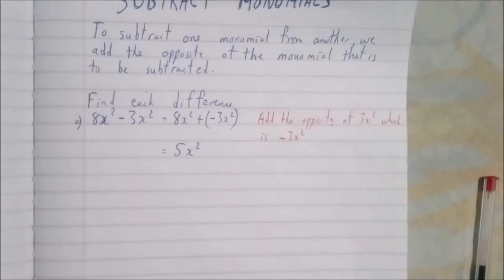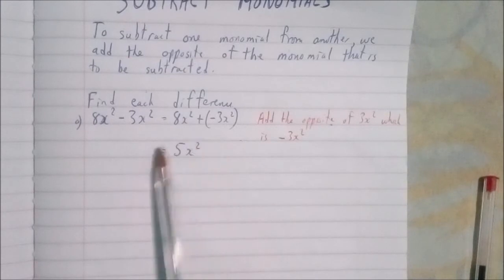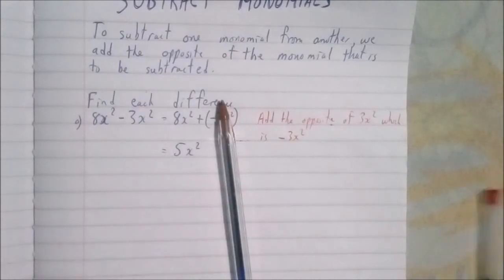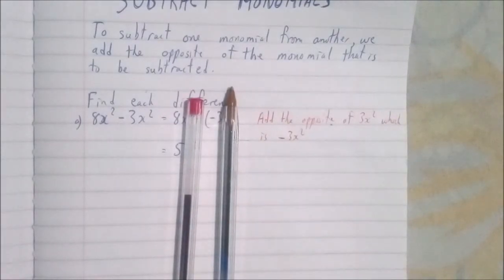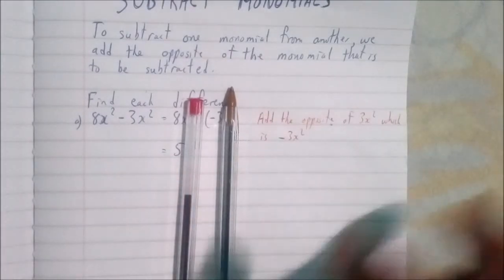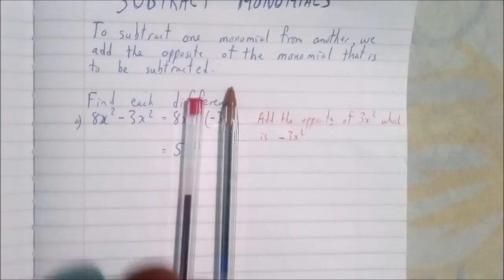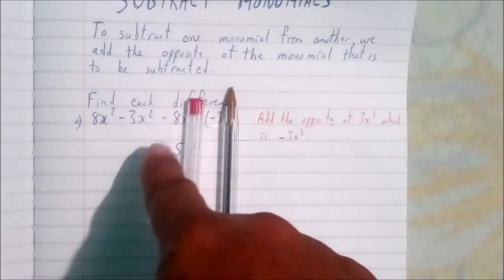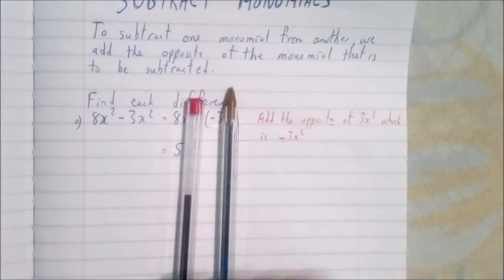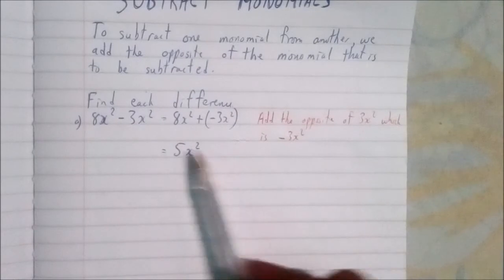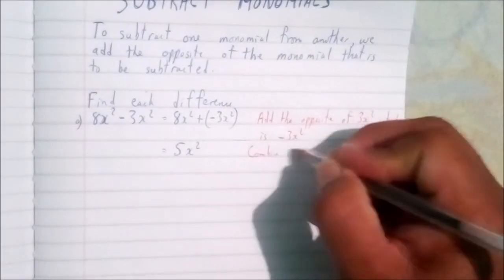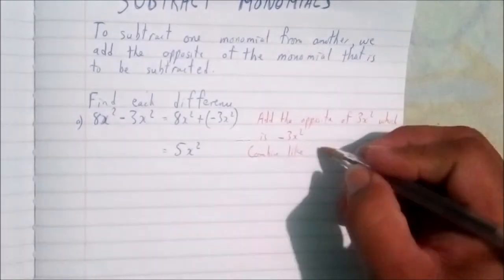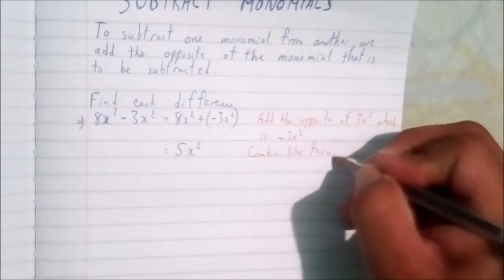Remember what we did in subtraction of integers: we keep the sign of the largest value. Ignoring the variable, the eight is larger and its sign is positive, so we subtract the smallest from the largest — eight take away three gives us five — and our answer is 5x². Combine like terms.